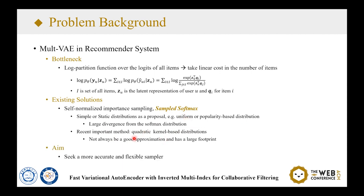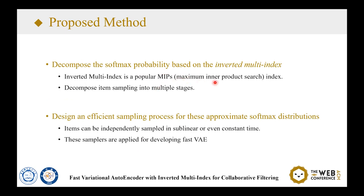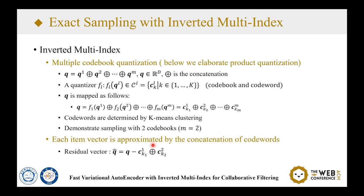Thus, we want to design an efficient sampler that is more accurate and flexible. Inspired by the popular MIPS index structure — the inverted multi-index — we can decompose the softmax probability based on it, and thus decompose the item sampling into several stages. According to this, we designed an efficient sampling process for approximate softmax distributions, from which items can be independently sampled in sublinear or even constant time. These samplers are applied for developing the fast VAE.